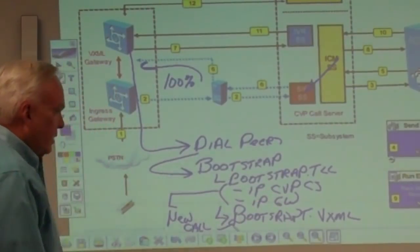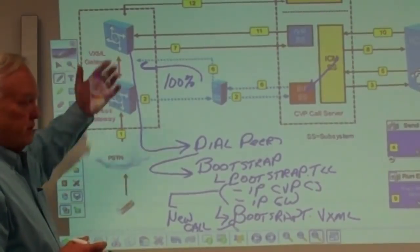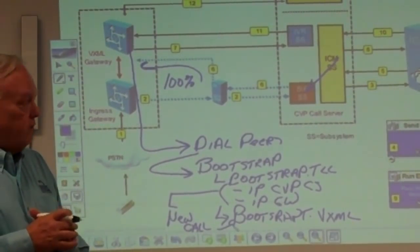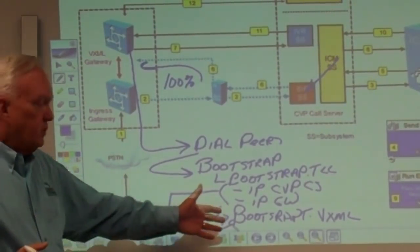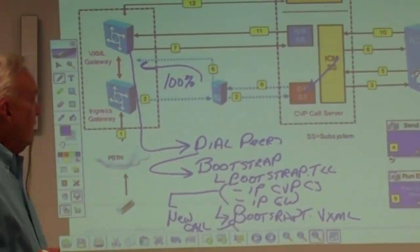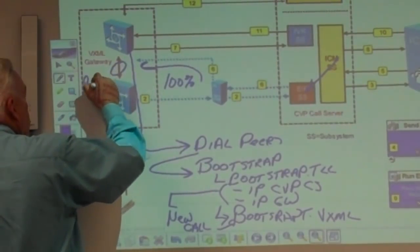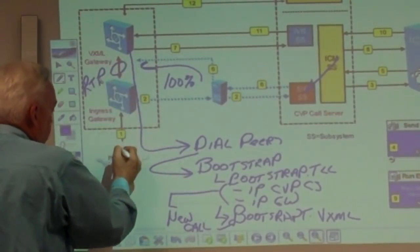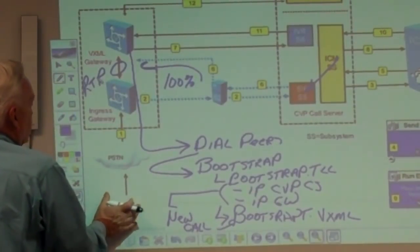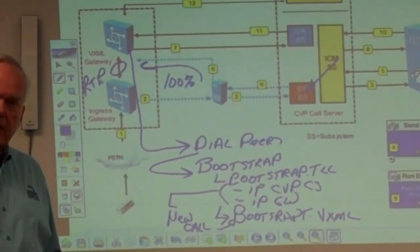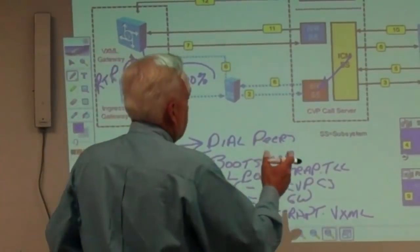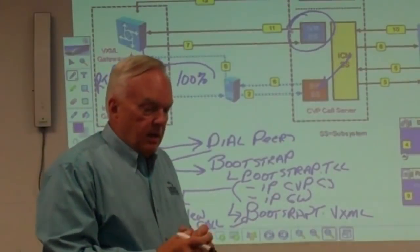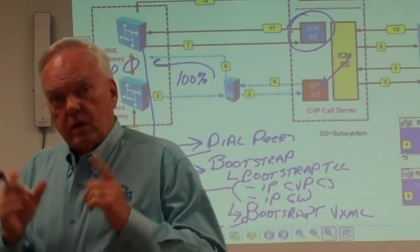When Bootstrap.TCL is done filling in the blanks on Bootstrap.VXML, it kicks off a service called New Call, which kicks off Bootstrap.VXML. The VXML gateway is also a VXML browser, so when it executes a VXML file it knows what to do — it follows whatever instructions are in the voice XML document. The instructions say: set up an RTP stream with the ingress gateway. Now that it knows which ingress gateway, there's an audio pipe that goes all the way down to the caller. When ready, audio can be dumped down that pipe to talk to the caller. Then it goes back to the CVP call server, this time to the IVR subsystem — we are now in the VRU leg.